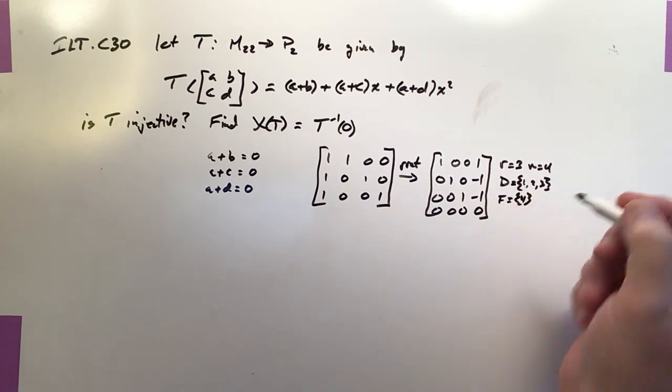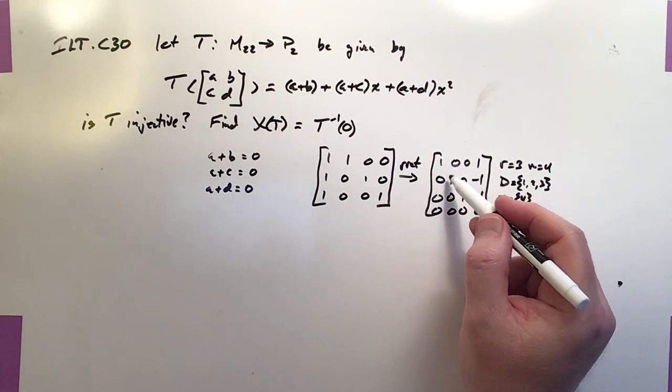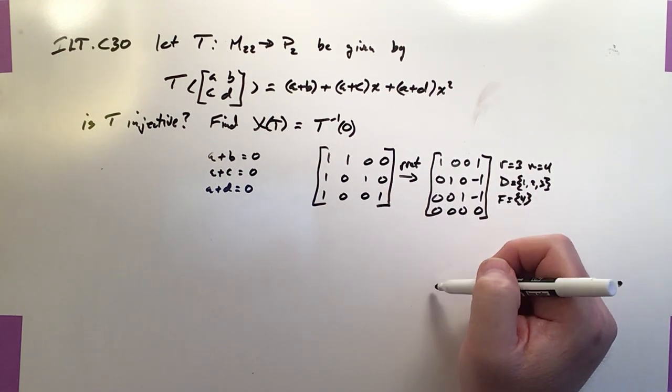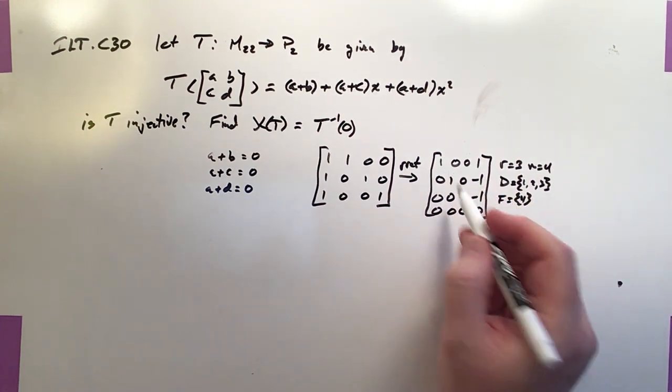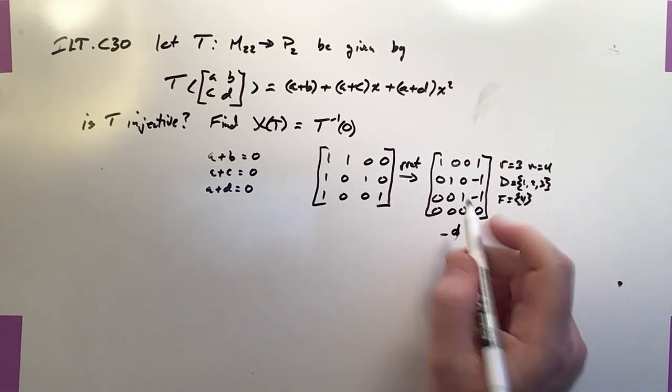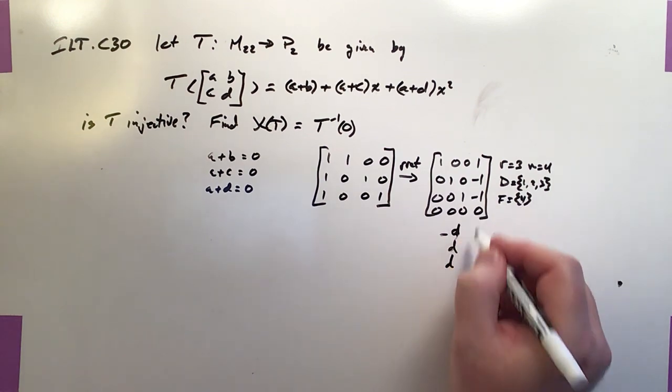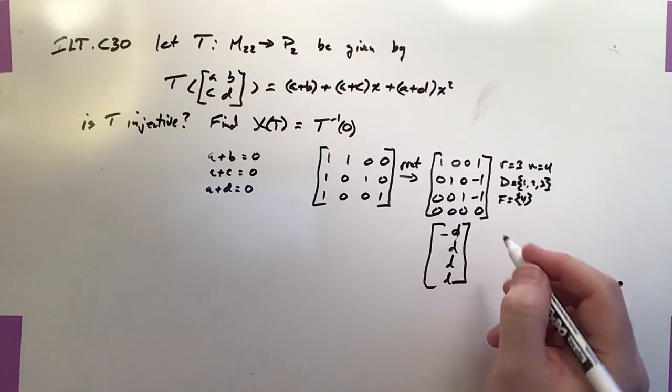So that means D is the free variable, and A, B, and C are all functions of D. So if we wrote a column vector that represented the solution set, it would look like this. A would equal negative D. B would equal D. C would equal D. And D, of course, would equal D.